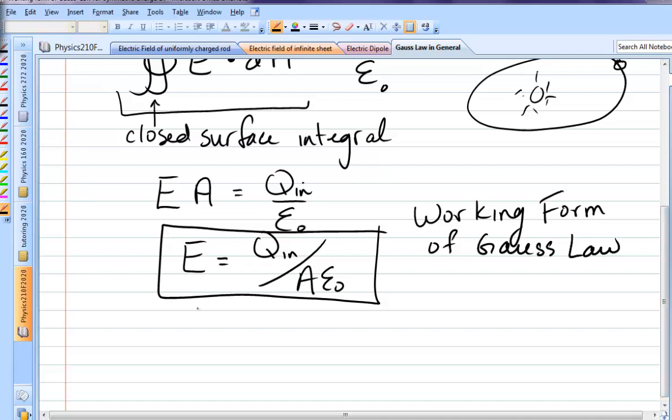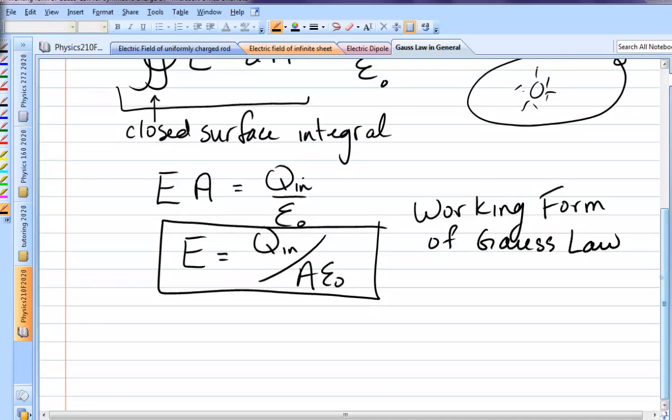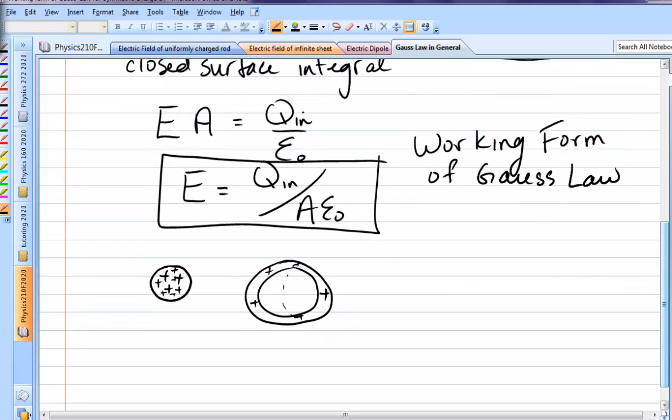So how are we going to use it? We're going to use it to find electric fields of anything that's spherically charged distribution. It could be a point charge, but that's pretty simple. It could be a big ball of charge, whether the charge is uniformly distributed in there or not. It could be a hollow sphere of charge. That's not a ring. That's supposed to be a hollow, like a Christmas tree ball.